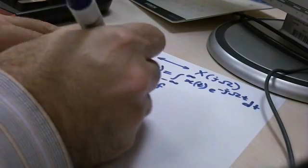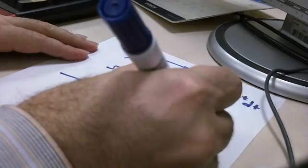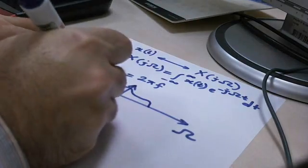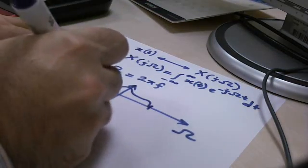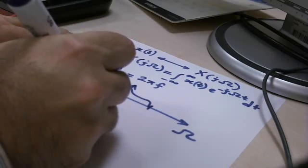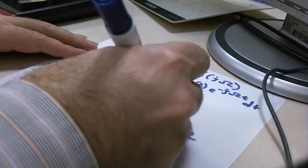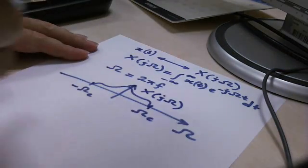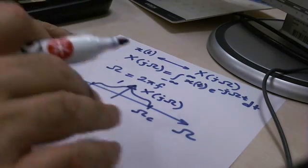Here, I'll assume that this X of j omega is something like this. It's a band-limited signal minus omega c to plus omega c. In general, X of j omega is complex, but I drew a real figure here.